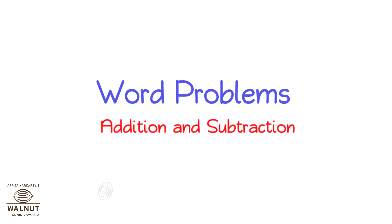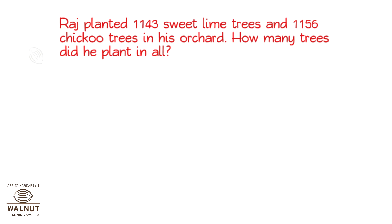Word Problems: Addition and Subtraction. Let us read the question we have to answer. Raj planted 1,143 sweet lime trees and 1,156 chiku trees in his orchard. How many trees did he plant in all?